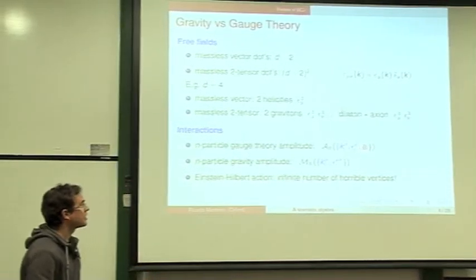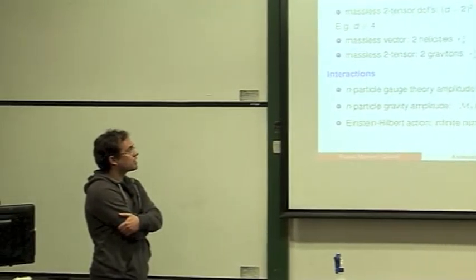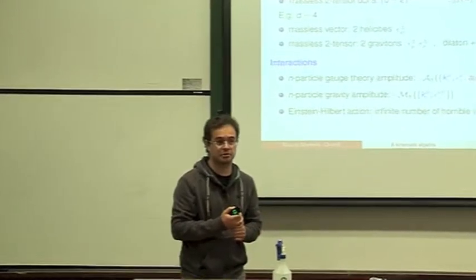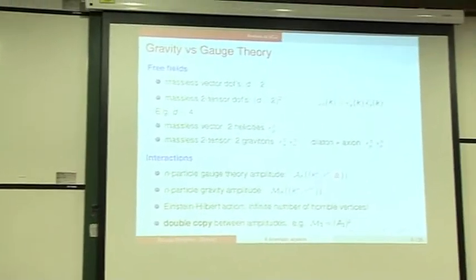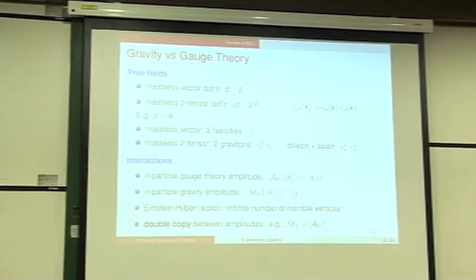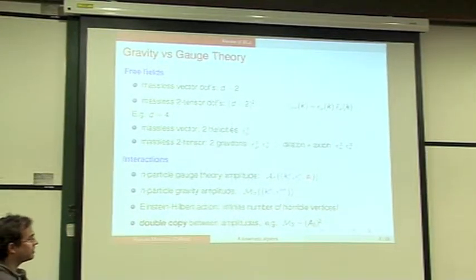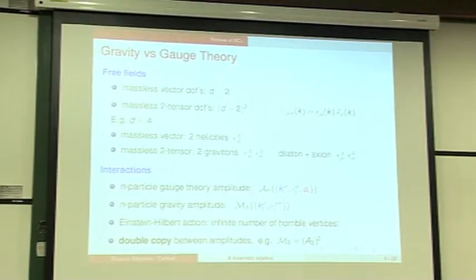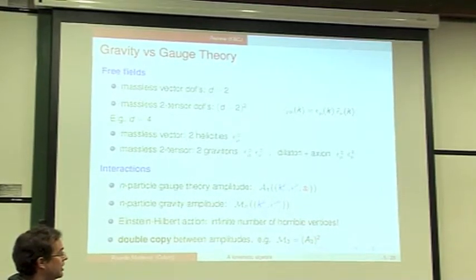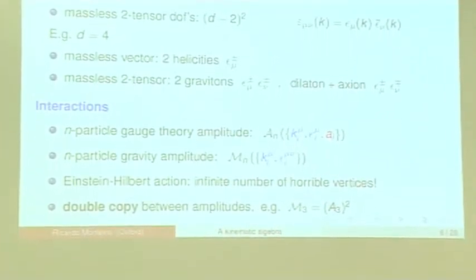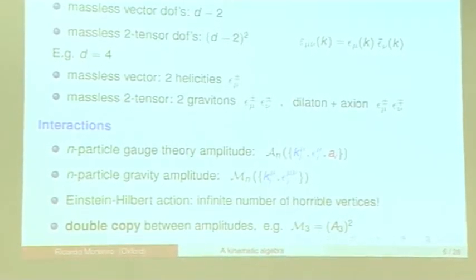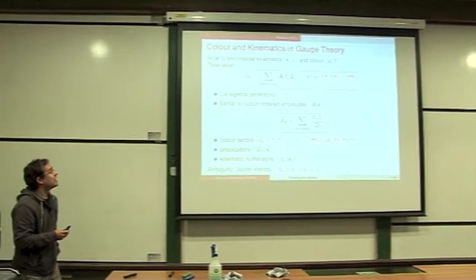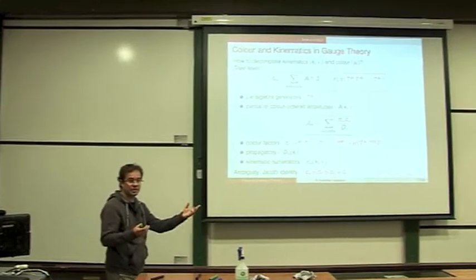Why would you be interested in relations between amplitudes of these theories? Well, partly because QFT is hard, but in the gravity case it is terrible, as we've seen here. The Einstein-Hilbert action, if you expand it, has an infinite number of vertices and they're all terrible starting from the simplest one. This notion of a double copy appeared in different ways. The simplest example is at the level of the three-point amplitude, which is completely fixed by Poincaré invariants, where the gravity amplitude is just the square of the gauge theory amplitude.